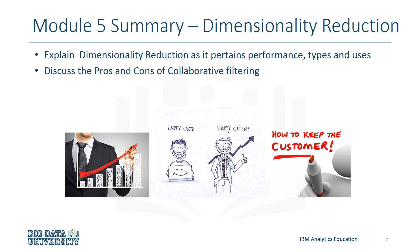In Module 5, you learned about dimensionality reduction, its main types, i.e. selection and extraction, and how it improves performance. Finally, you can describe the uses for collaborative filtering and recommendation systems, as well as the related pros and cons.